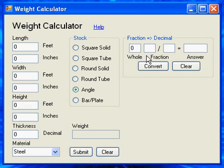Over here is a fraction to decimal conversion. Say you want 3 eighths of an inch converted to decimal. We'll do 3 eighths, convert, and that's it over here. And then you can put it in any one of those fields.